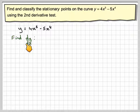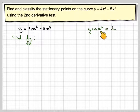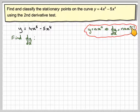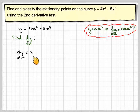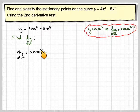Finding dy/dx: if we differentiate, the rule is that if y = axⁿ, then dy/dx = naxⁿ⁻¹. Bring the power down in front, write down ax, and reduce the power by 1. Applying that to each term, we get 4 times 5 which is 20x⁴ minus 20x³.